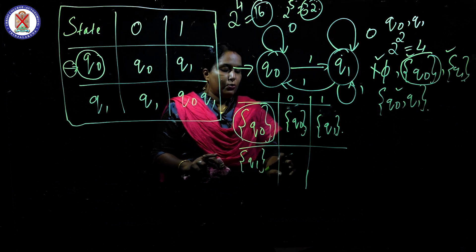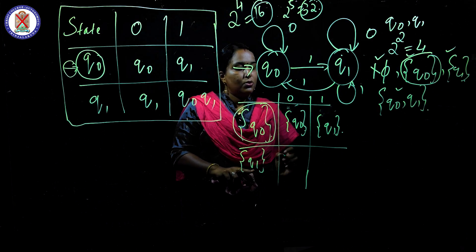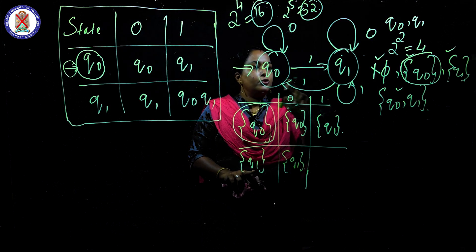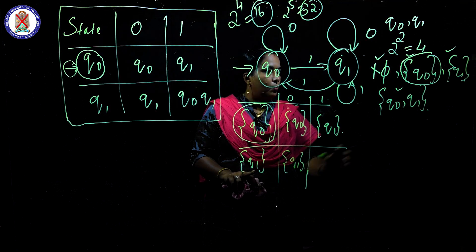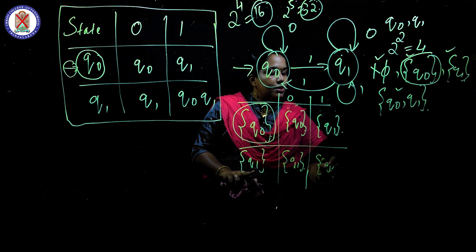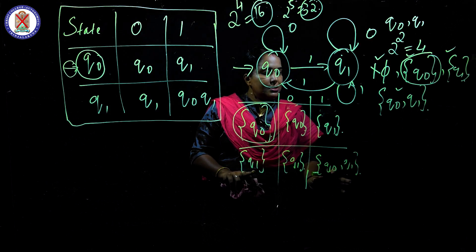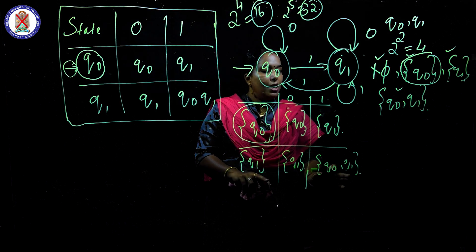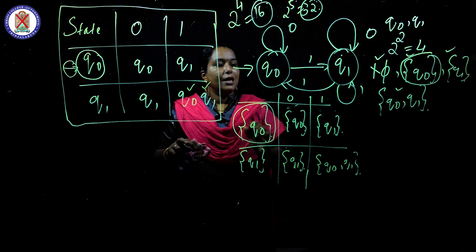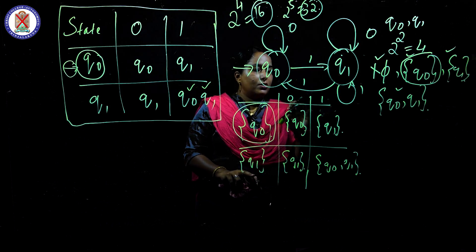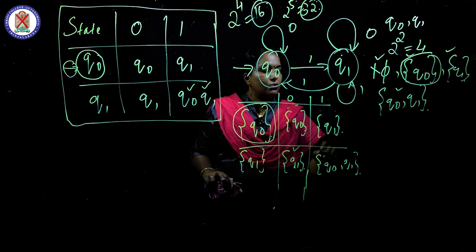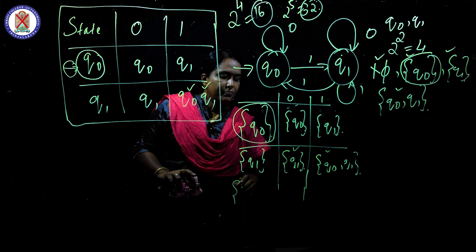Now for state {q1}: q1 on 0 goes to q1 itself. q1 on 1 goes to q0 and also q1, so we cannot write just q1 — we must write set {q0, q1}. So q1 on 0 goes to {q1}, q1 on 1 goes to {q0, q1}. {q1} is already visited, so next we must visit {q0, q1}.